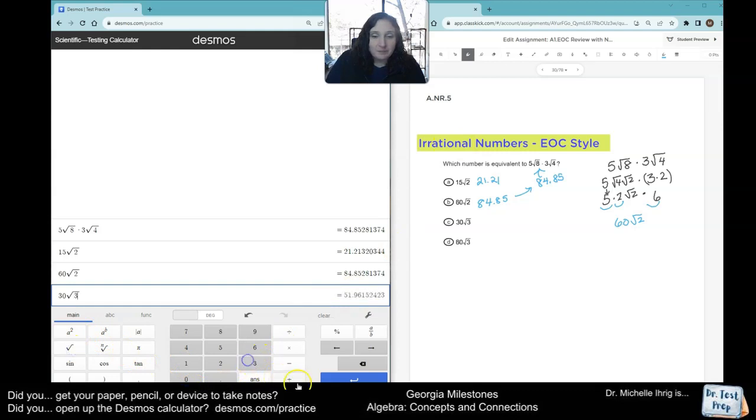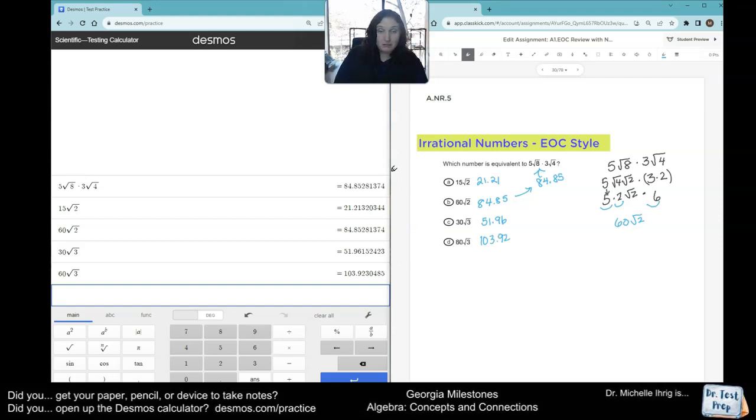Let's try the other ones. 30 radical three, 51.96. 60 radical three, 103.92. So you can do it the algebraic way, or you can use the mathematical tool, which is the calculator, and get it right that way too. And it'll work the same way for every question. Bye.